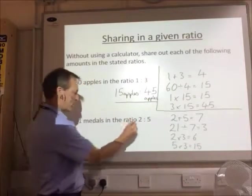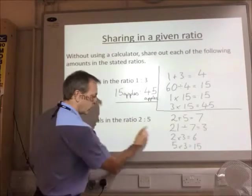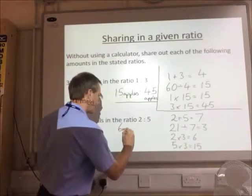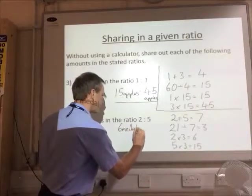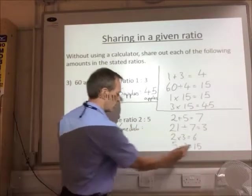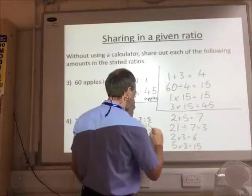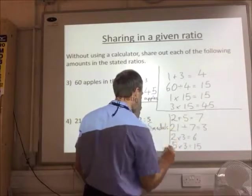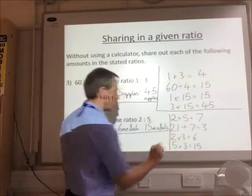And now I'm going to write down my answer. So 2 to 5, 21 medals, I've got 6 medals to 15 medals. So there's my answer there.